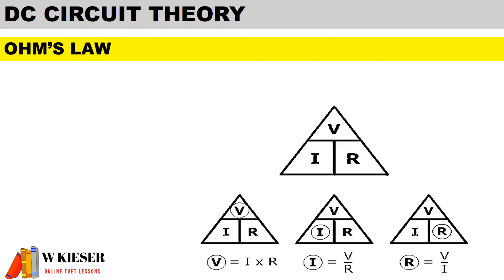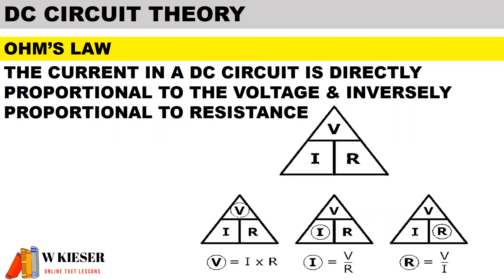To define Ohm's Law: the current in a DC circuit is directly proportional to the voltage and inversely proportional to resistance, as long as temperature remains constant. Using this pyramid, we can derive the formulas for Ohm's Law. Voltage equals current multiplied by resistance. Current equals voltage divided by resistance. And resistance equals voltage divided by current.